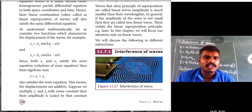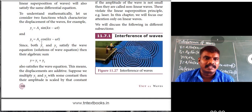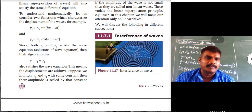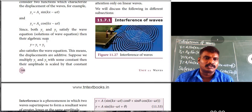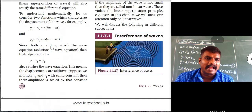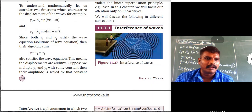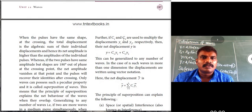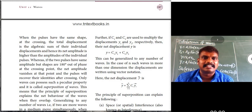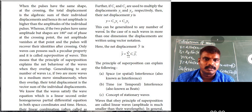Mathematically, y1 = a1·sin(kx − ωt) and y2 = a2·cos(kx − ωt). The superposition gives y = y1 + y2. Further, if constants c1 and c2 multiply the displacements y1 and y2 respectively, the net displacement is y = c1·y1 + c2·y2.